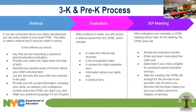To start the evaluation process for your child in 3K or pre-K, you would write a letter to your CPSE. That letter is called a referral and must be made in writing. In the letter, you'll put that you're requesting an evaluation for your child. Provide your child's full legal name and date of birth, describe any areas of concern with your child's development, list any services your child may have received previously, and provide your full contact information including name, address, and telephone number. If English is not your preferred language, indicate that as well.